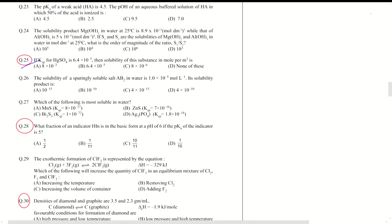For question 25, KSP of HgSO4 is given. KSP of HgSO4, since it's 1 to 1, can be written as S squared, which is 6.4 times 10 to minus 5, or 64 times 10 to minus 6. That gives you the value of S.